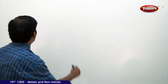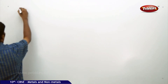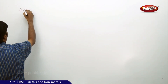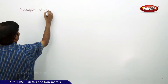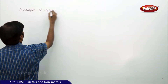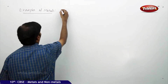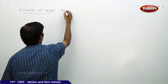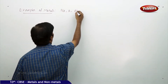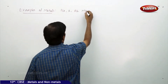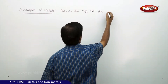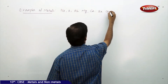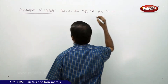As part of the discussion on metals and non-metals, let's take some examples of metals: sodium, potassium, rubidium, magnesium, calcium, barium, copper, chromium, and so on.